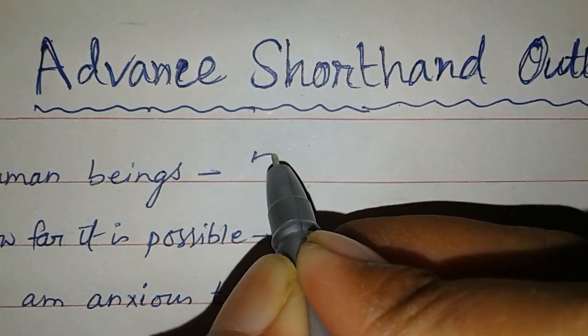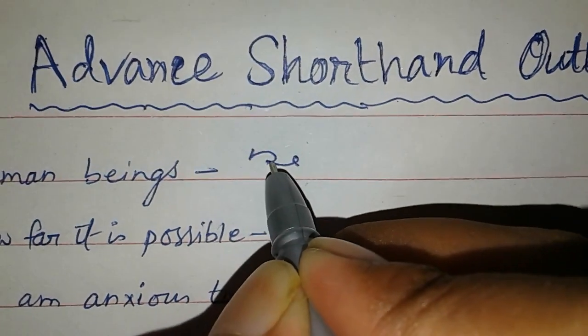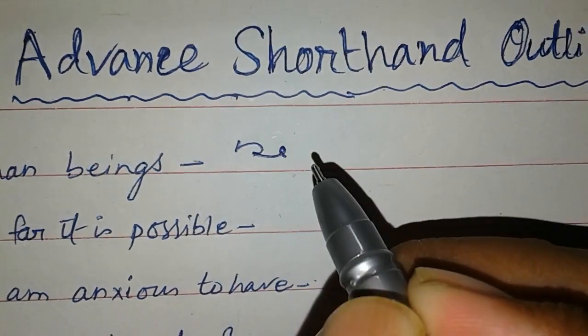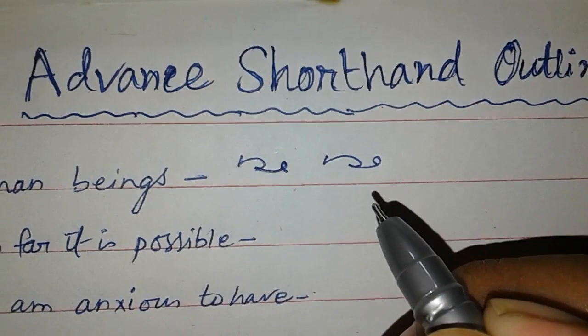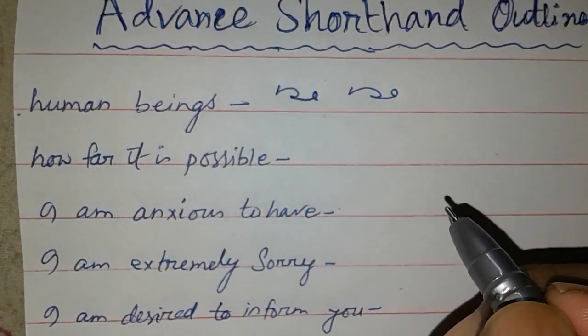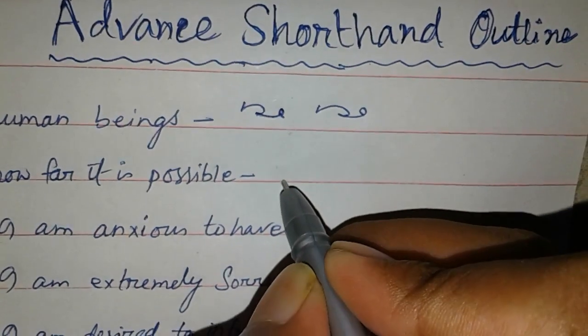H M N N G S, this is N G as settle. And then how far it is possible, how far is P S.